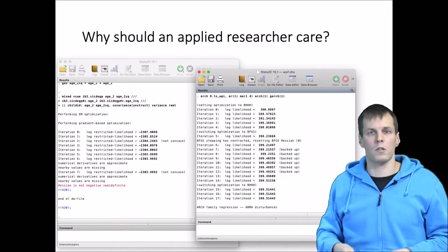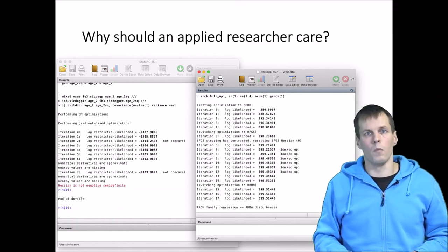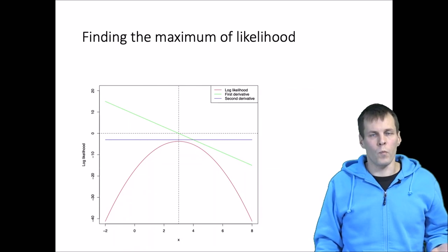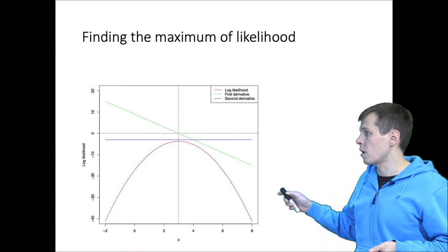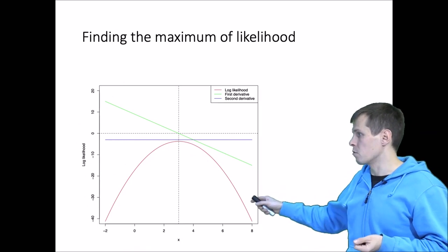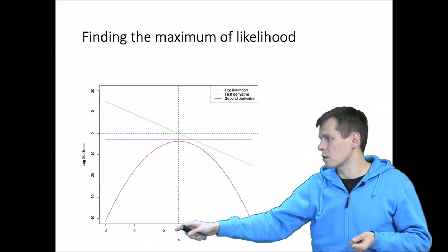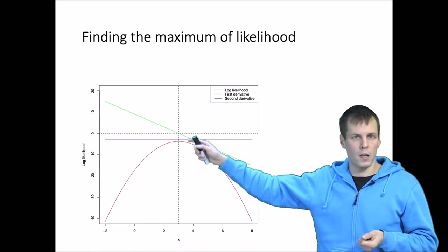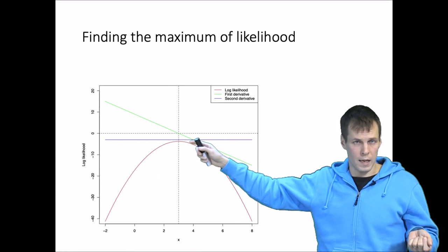You need to understand what the Hessian matrix is and what it tells us. When we maximize the likelihood, we typically do that with numerical optimization — we try different values of this likelihood function until we find that the value of the function is maximized when we set x to 3.